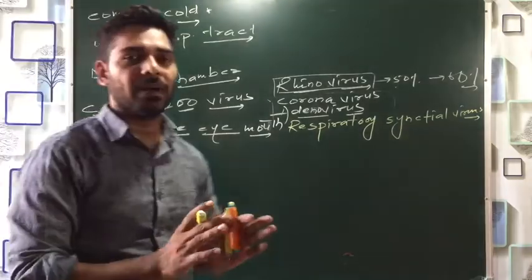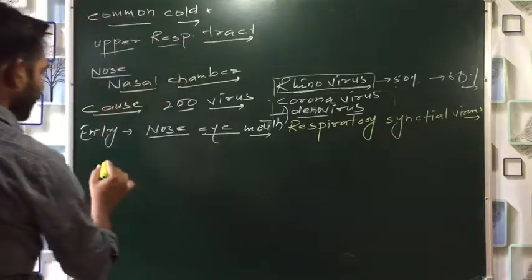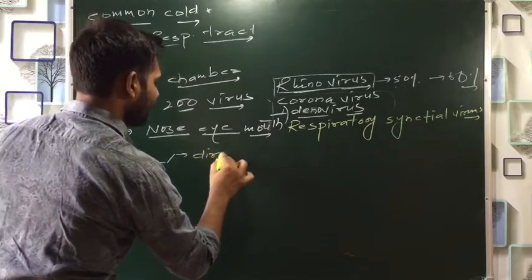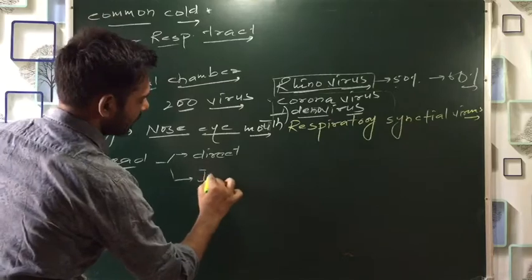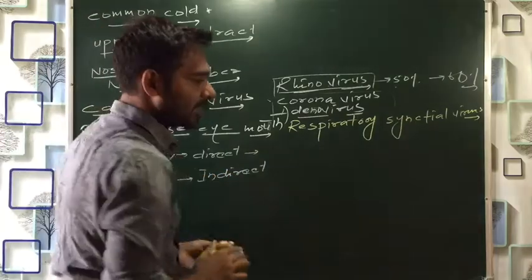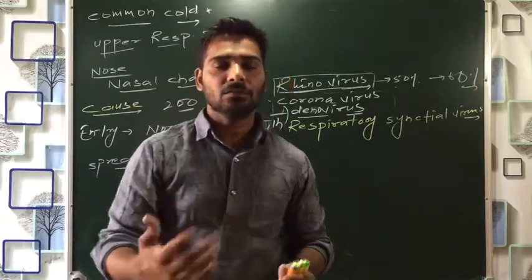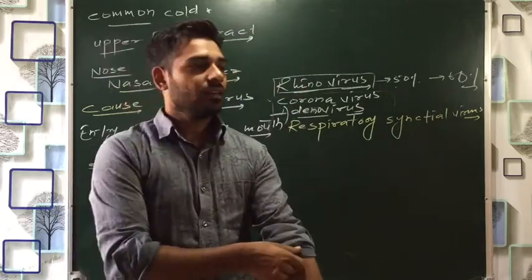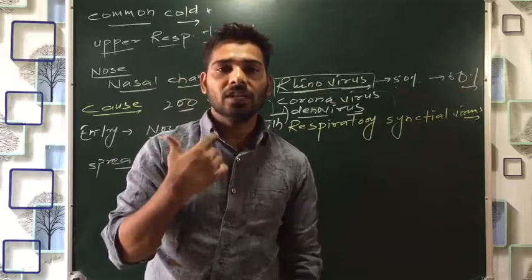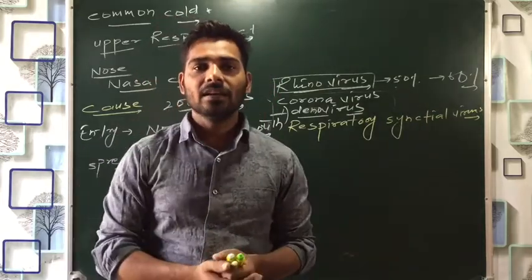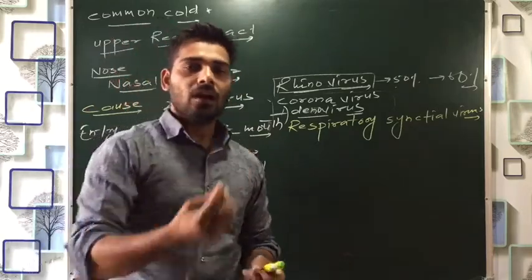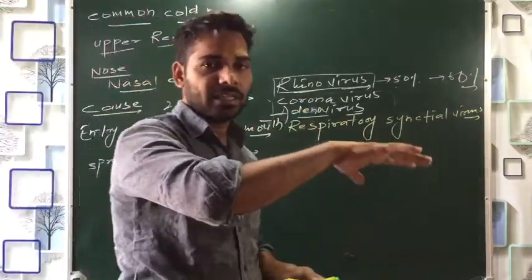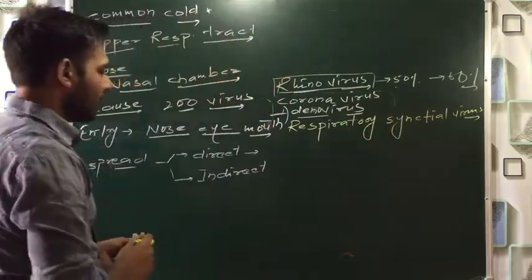Let's talk about the spread. The spread happens in two ways — directly or indirectly. If someone is infected and sneezes, many viruses come out and travel far through the air, coming into contact with everyone nearby. This is called direct transmission — direct airborne transmission.